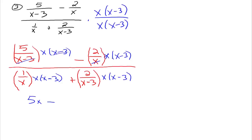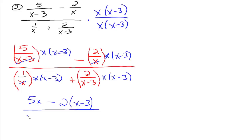Then minus: this x and this x divide out, and I'm going to encourage you to leave it written as 2 times x minus 3, as opposed to distributing that 2 through to get 2x minus 6 — wait on that, because it's too easy to make a sign error. So we're left with the factor 2 times the factor x minus 3. In the denominator: the x's disappear and we're left with 1 times x minus 3, which is just x minus 3. Then plus, the x minus 3 and x minus 3 go away, leaving 2x.